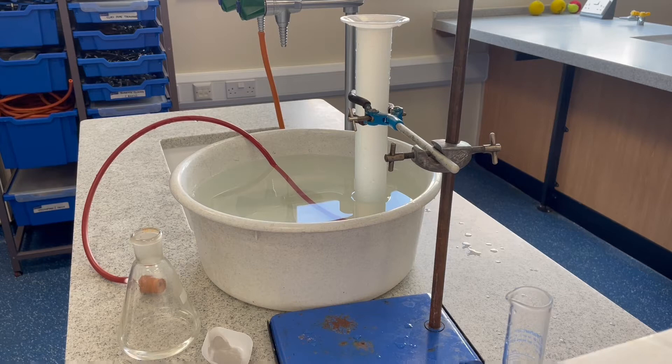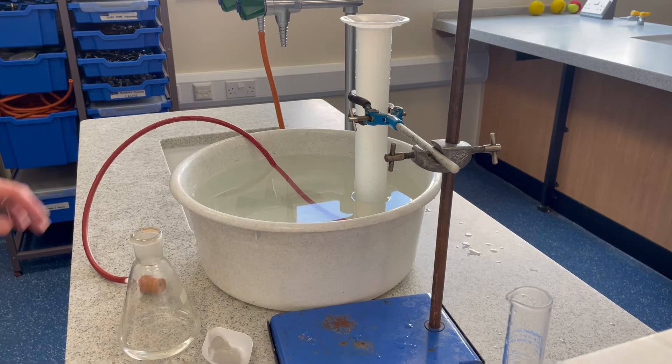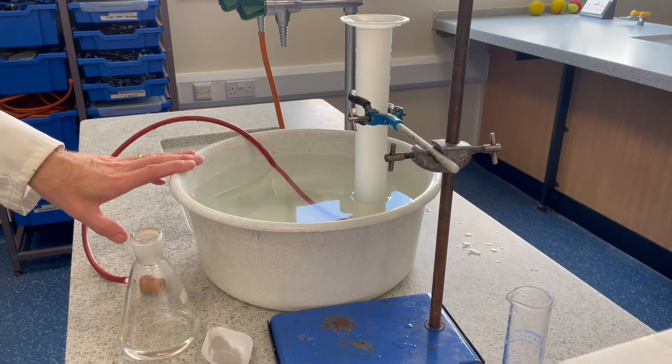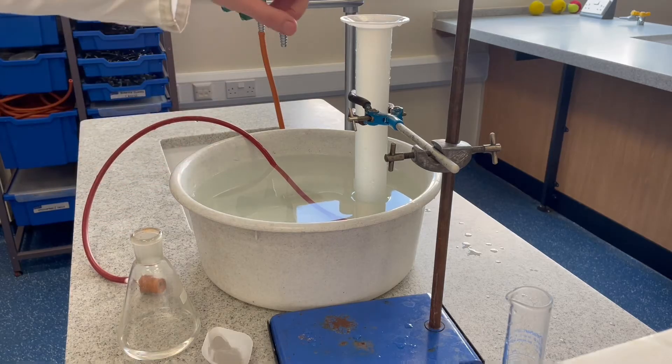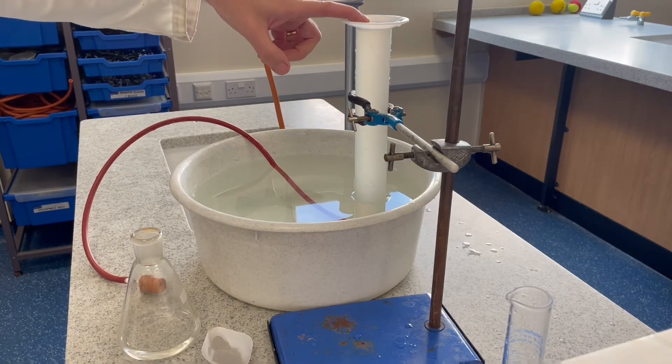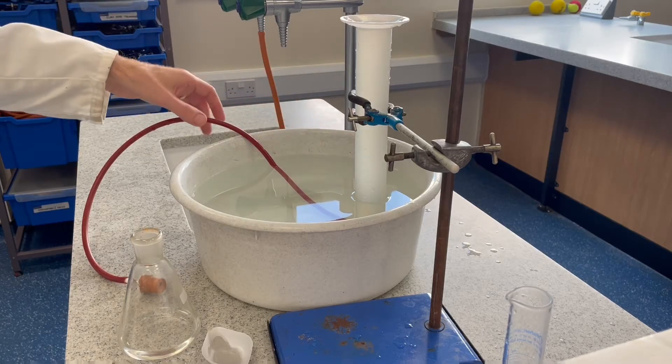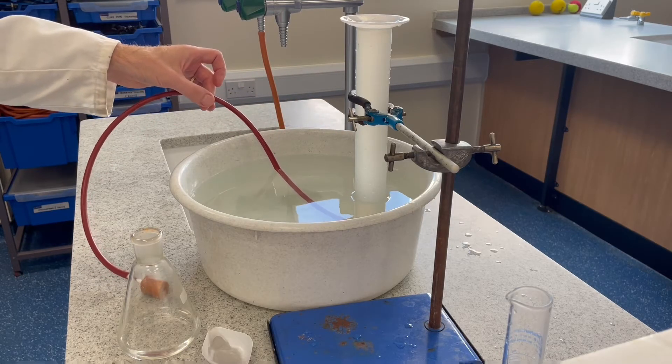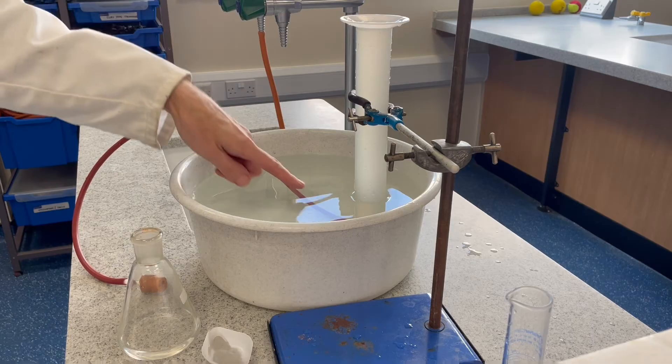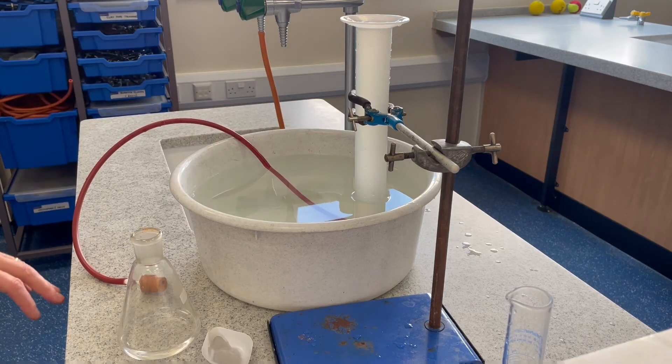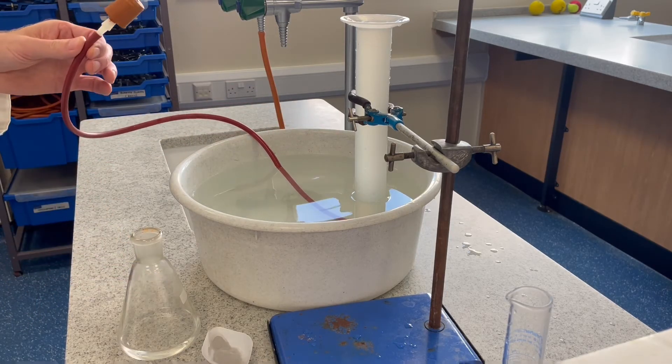I'll run through the basic procedure. We've got this washing up ball here full of tap water and an upturned 250 cm³ measuring cylinder full of water. The delivery tube is going into the bottom of the upturned measuring cylinder. There's the other end there.